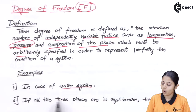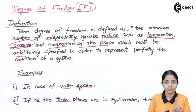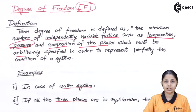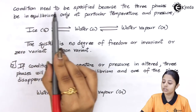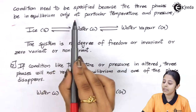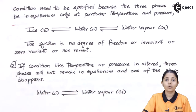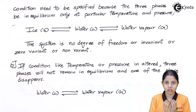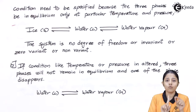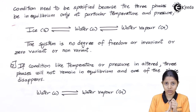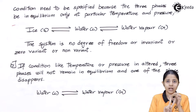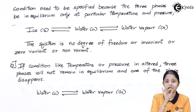In the case of a water system, if all three phases — solid which is ice, liquid which is water, and gaseous form which is water vapour — are in equilibrium, then no condition needs to be specified because the three phases can be in equilibrium at one particular temperature and pressure. That means if I have an ice cube at the freezing point, it will have one specific temperature and one specific pressure, and at that temperature and pressure, ice will show all three forms: solid ice, liquid water, and gaseous water vapour.